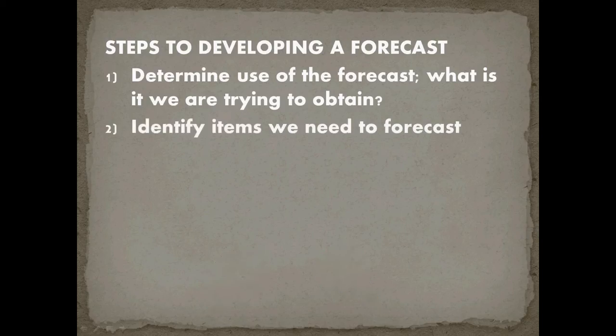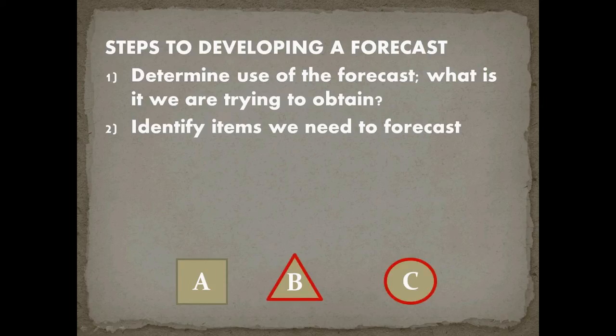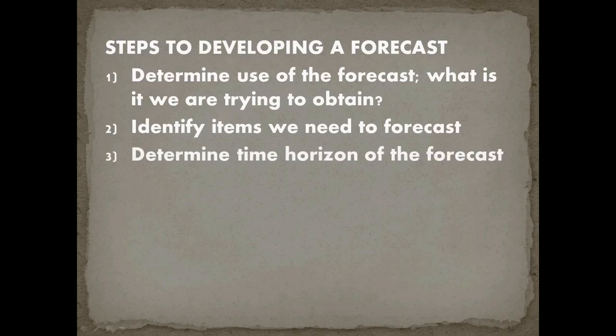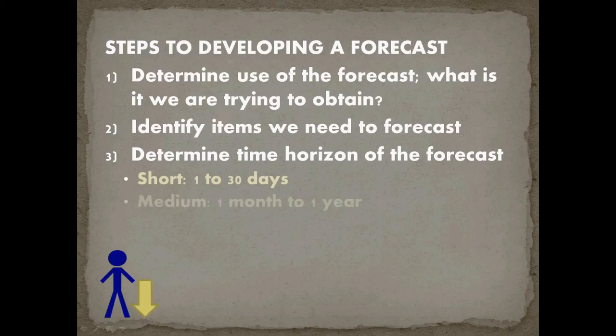So maybe there's A, B, and C that are all pertinent to our business but to develop the forecast maybe we only need B and C. Once we've identified those items we need to determine the time horizon of the forecast. So is it short? Is it a forecast that's right in front of us in the next 1 to 30 days? Is it maybe medium which is maybe from one month to a year out? Or is it maybe a long term forecast of more than a year?